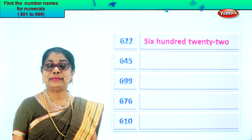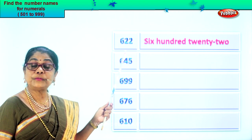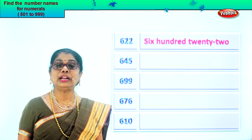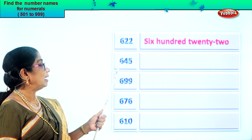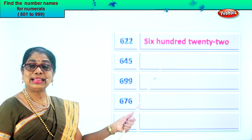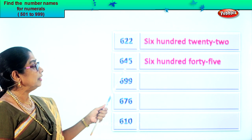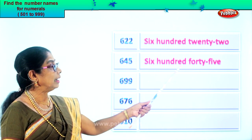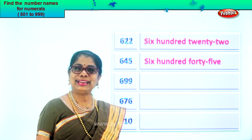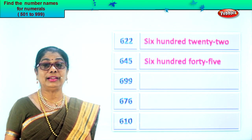Next numeral: six, four, five. Five in the ones place, four in the tens place and six in the hundreds place. Six hundred forty-five. First we'll write six hundred, then we write forty-five. Six hundred forty-five. Did you enjoy? You know the spelling of forty-five and the spelling of hundred.